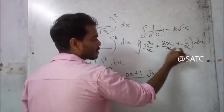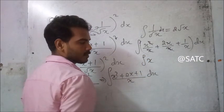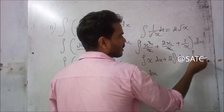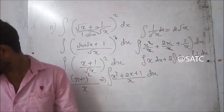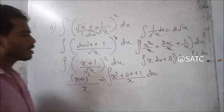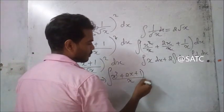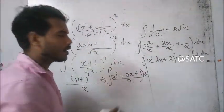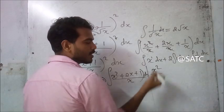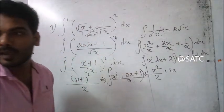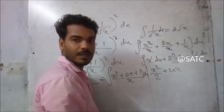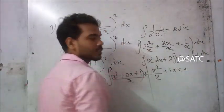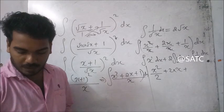Now, x squared by x equals x, so integral x dx, plus 2 times integral 1 dx, plus integral 1 by x dx. Note that the differentiation of x is 1, so the integral of 1 is x, and 1 by x is the integral whose result is log x.